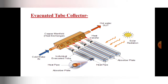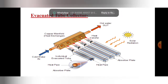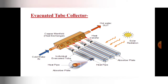In the evacuated tube collectors, the difference from flat plate collectors is that while in flat plate collectors cold water comes in from one side and hot water exits from the other side, in evacuated tube collectors both cold water in and hot water out occur through the same pipe. Heat pipes are used in the evacuated tube collector to transfer the heat collected from solar energy to the water for heating purposes.